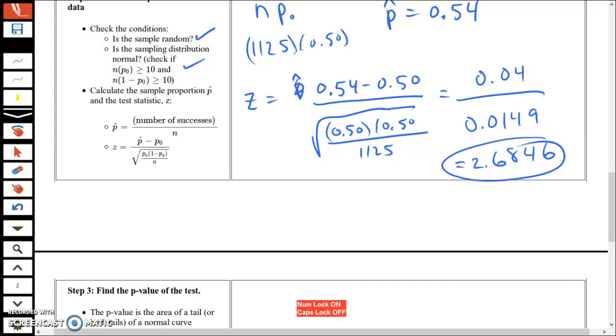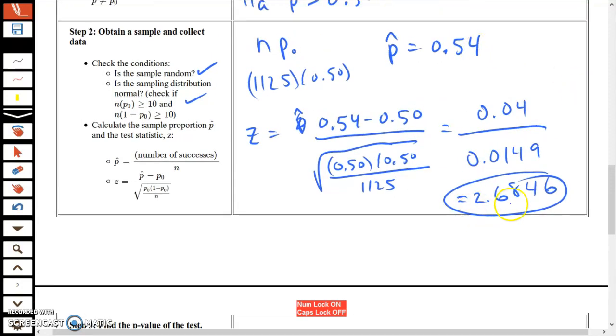That is the z-score, or the test statistic, which means that this 54% is about 2.68 standard errors higher than 50%. So that's probably not due to random chance. It's probably really the majority of the population.